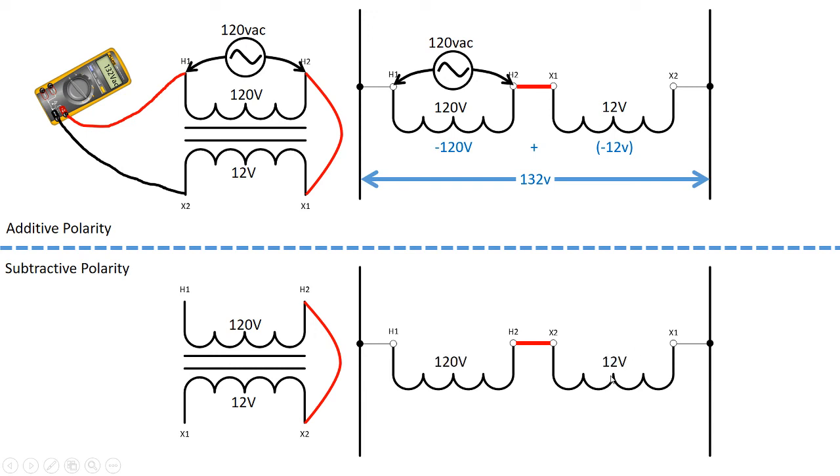And again, there's our 120 volt and our 12 volt coil. We're going to start off—we're going to put our 120 volts across H1 to H2, which is represented over here. There's our applied voltage there as well.